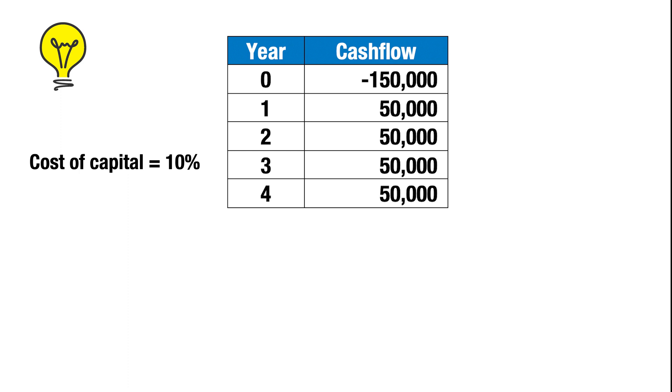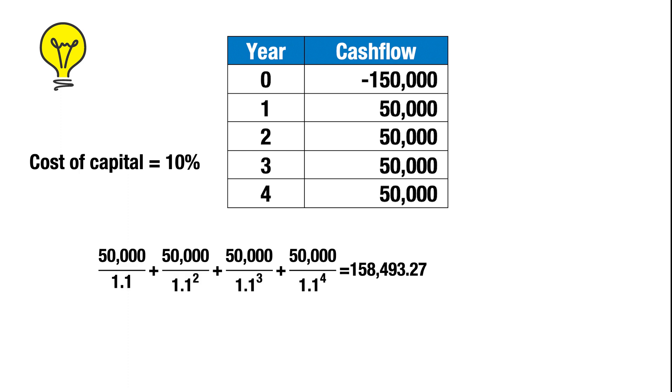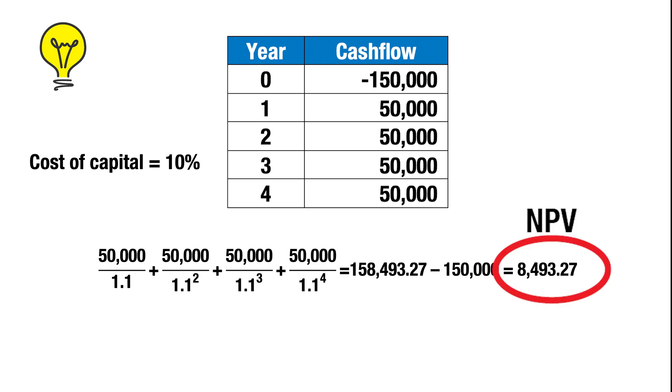In this case, the $50,000 per year for four years is actually only worth $158,493.27 today. So while you're earning a positive net present value, it's a lot lower than we initially thought. This investment has a net present value of $8,493.27. You see why it's so important to consider the net present value and not just the dollars in versus dollars out — in that example, we earned $50,000 more cash than we spent, but we really only made just under $9,000.